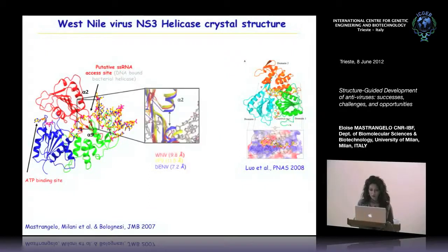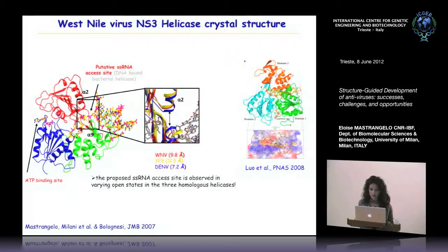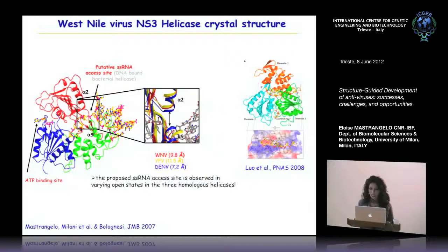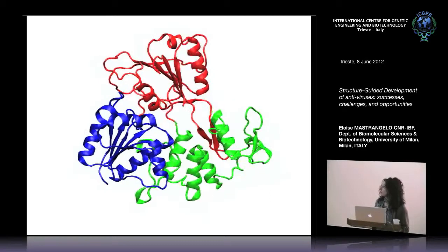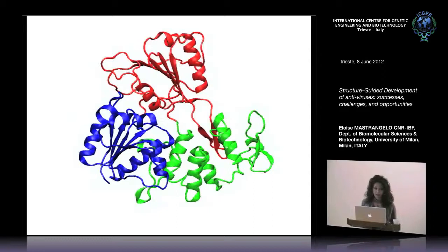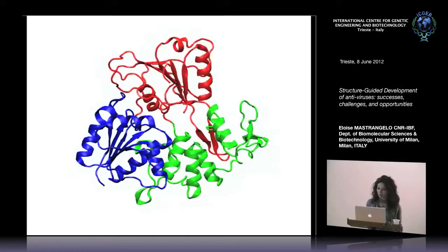We superposed the structure of West Nile virus helicase with other known Flaviviral helicase structures — yellow fever and dengue virus — and noticed that the distance between these two alpha helices varies between 7.2 and 11.5 angstroms. We started to think that this variation could be important for the unwinding activity of the helicase. Normal mode analysis showed the protein is able to undergo a scissor-like movement important for helicase progression along and unwinding of the single-strand RNA.